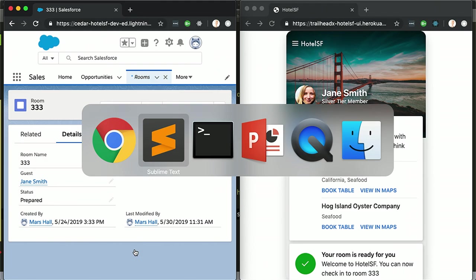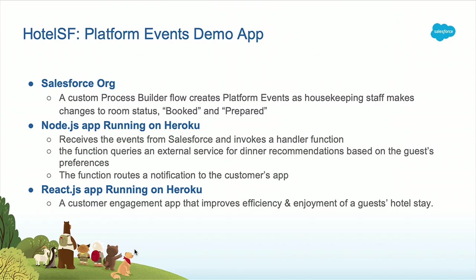So what have we actually shown you here? In this demo we have a Salesforce org with a custom process builder flow. That flow creates a new platform event — a room status update event — each time the room status changes. Then on Heroku we have two different apps running: a Node.js app that is directly subscribed to the Salesforce Streaming API, receives these events, and invokes one of these handler functions. The function handles querying the external service and routing the notification to the consumer app. And finally, we have a React.js app running on Heroku — that's the customer experience app demonstrated. Once you get into this pattern, it really sets you up for success with adding a lot of these nuanced customer engagement steps.